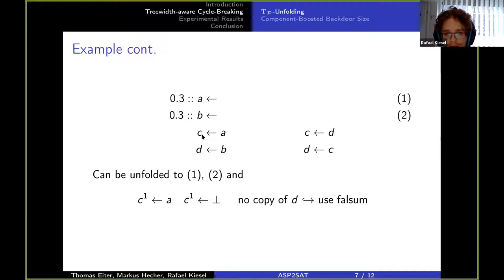Then next, we're going to look at the atom c and introduce a copy of the atom. And then we look at all the rules that we can use to derive c. Here we can derive c from a.